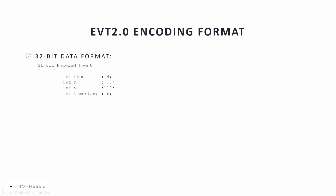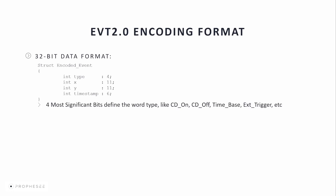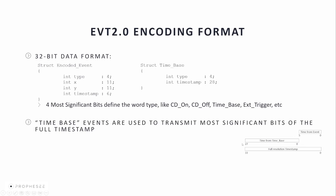EVT2 is a 32-bit format where the four most significant bits are used to define the word type, which can be CD-on, CD-off, time-base, and some special types like external trigger, and so on. 11 bits are used for the X and Y pixel address in the sensor array, and 6 bits are used for the timestamp. The sensor timestamping is of microsecond precision. The number of bits for the timestamp per event is limited, so we encode the full timestamp in two parts: six least significant bits come from the CD event words, and the 28 most significant bits come from the special word type called time-base that is sent more rarely. The main advantage of the EVT2 format is its simplicity to decode. Currently, it is mainly used on the Gen3 sensors.